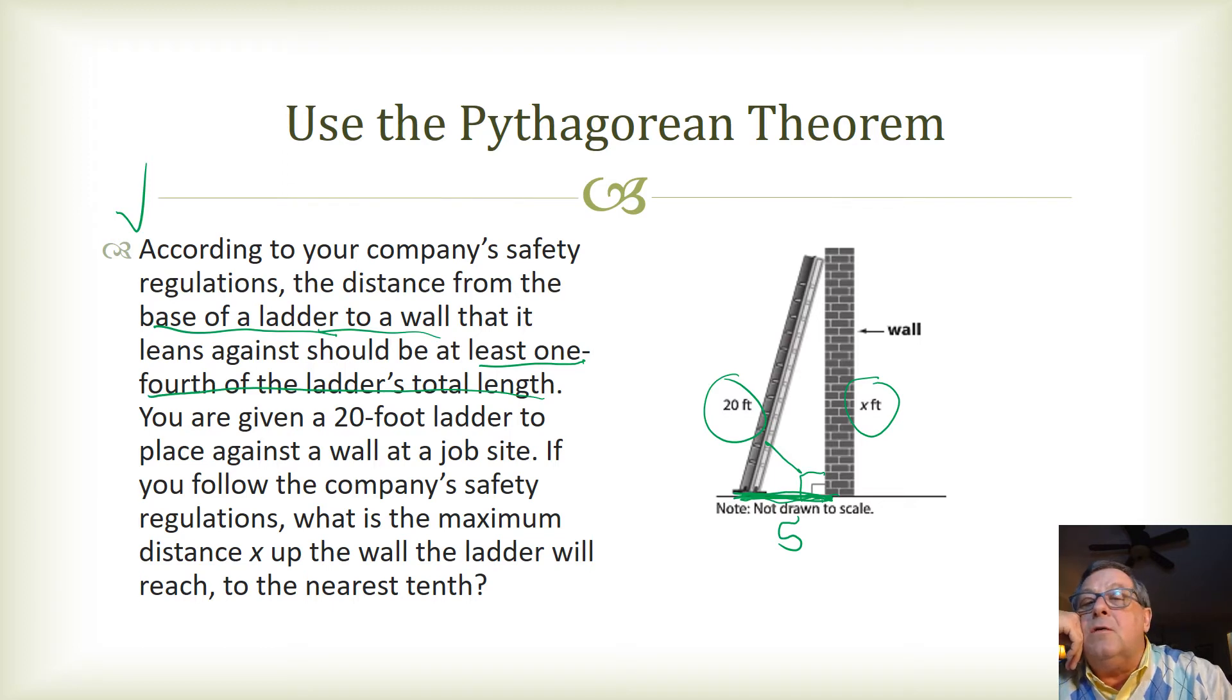Let's see, I don't have a whole lot of room here to work, but I would set this up like this. Let's say we got x squared plus 5 squared equals 20 squared.